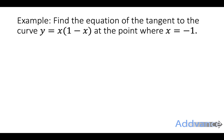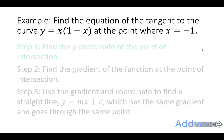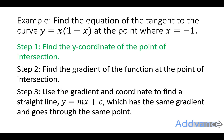Example: find the equation of the tangent to the curve y = x(1 − x) at the point where x = −1. Step one, we're going to find the y-coordinate of the point of intersection — that is, the special point where the tangent and the curve touch.